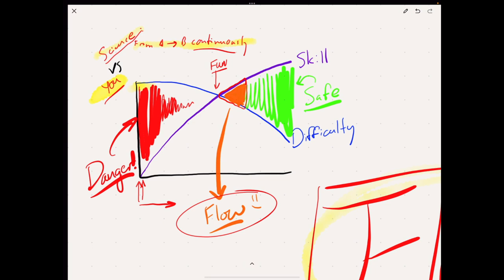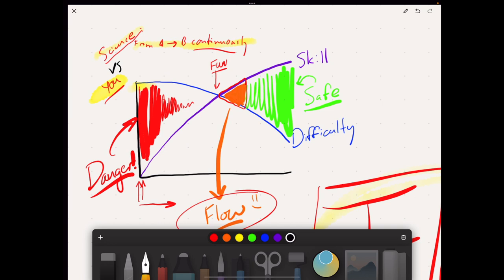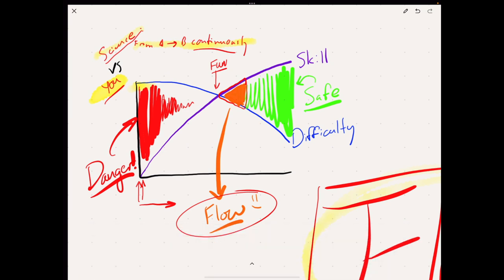So this is the key here is that everything on the right side of this graph, beyond this inflection point right here, everything to the right is actually safe. Okay. So as your skill increases, and as the difficulty goes down, you're more and more likely to be safe.